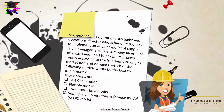The first scenario is: Mira is an operations strategist and operations director who is handled the task to implement an efficient model of supply chain management. The company faces a lot of waste and needs to redesign each process timely according to the frequent changing market demand or needs. Which of the following models would be best to implement? Your options are: Fast chain model, Flexible model, Continuous flow model, and Supply Chain Operations Reference or SCOR model. I'll give you some time to think — you can pause this video to look for the answer.